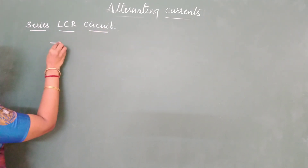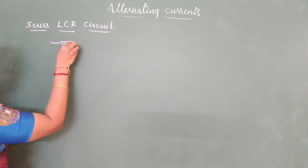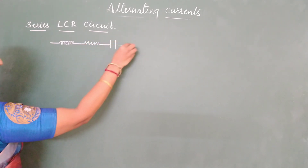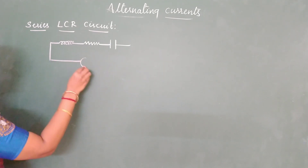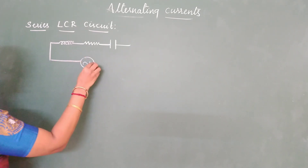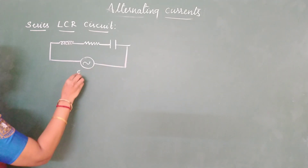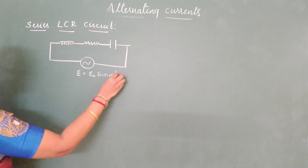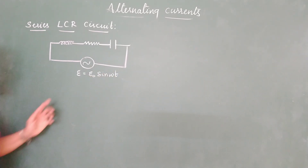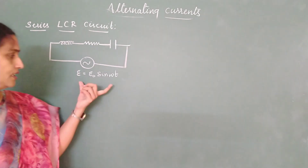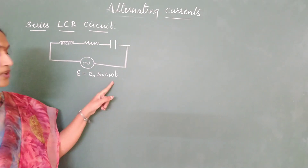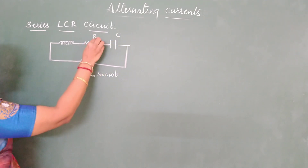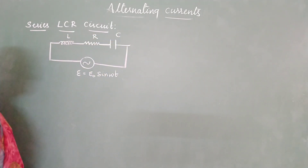A series LCR circuit consists of three elements: inductor, resistor, and capacitor, all of them connected to an alternating EMF. E is equal to E₀ sine omega t. We have been taking a sinusoidal input from the beginning and continuing the same. So capacitance is C, resistance is R, and let inductance be L.